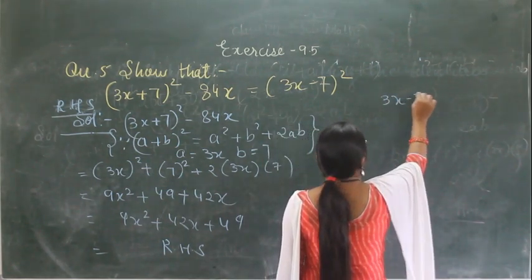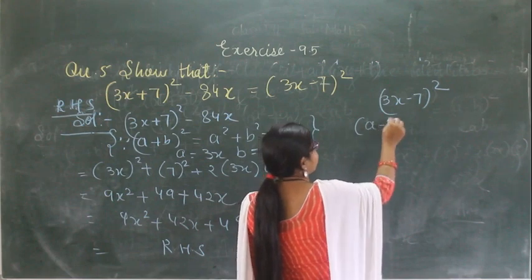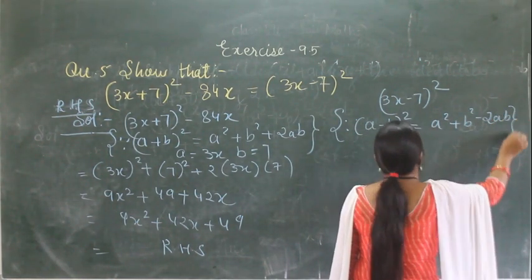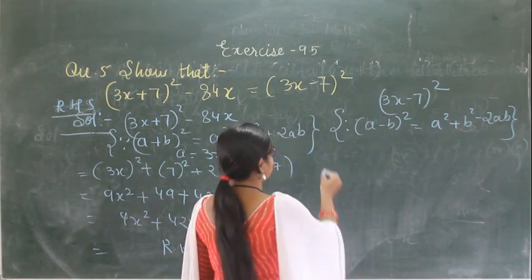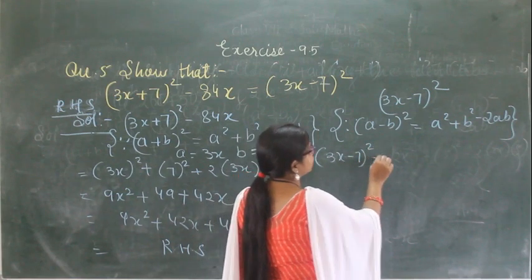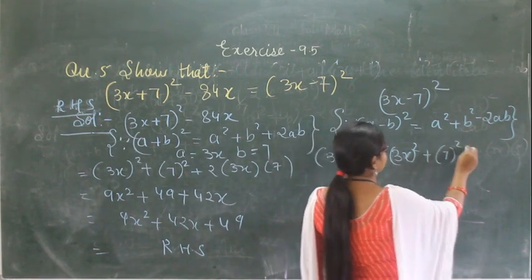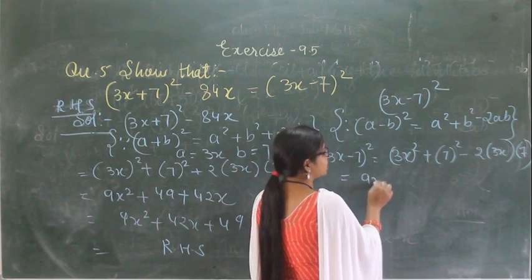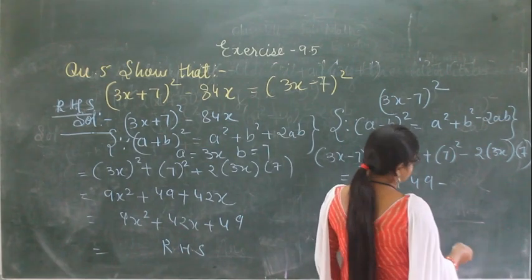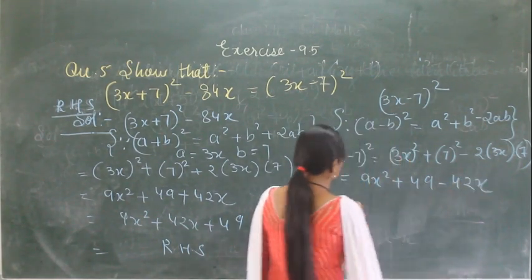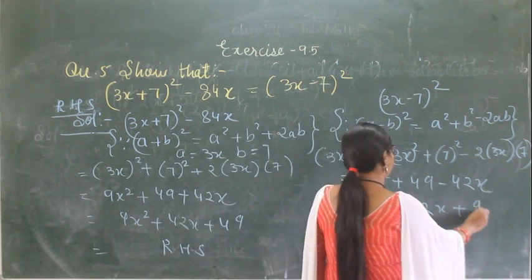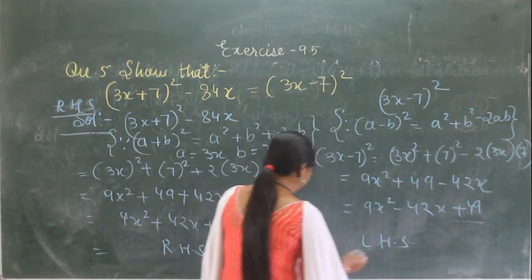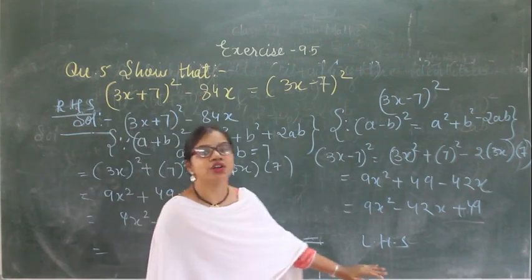Now for the RHS: (3x minus 7) whole square. Using (a minus b) whole square formula: a square plus b square minus 2ab. Here a is 3x and b is 7. Substituting: (3x) square plus 7 square minus 2 into 3x into 7. That gives 9x square plus 49 minus 42x, which we write as 9x square minus 42x plus 49. See — this equation equals the LHS. That means the right hand side is equal to the left hand side, which is what we had to show.